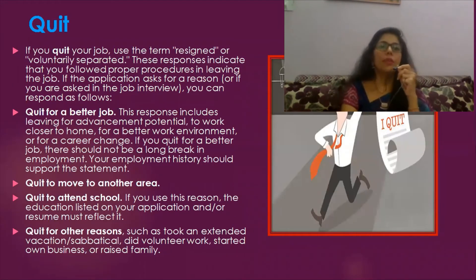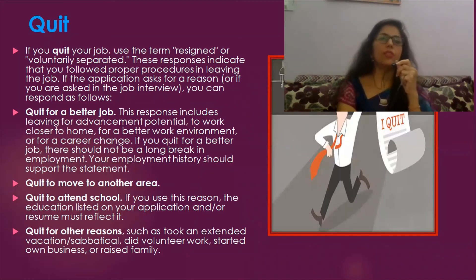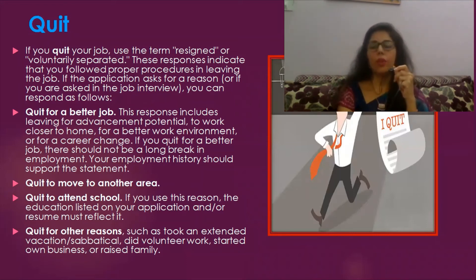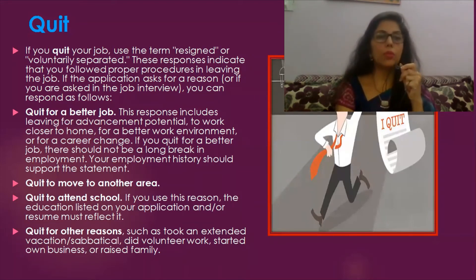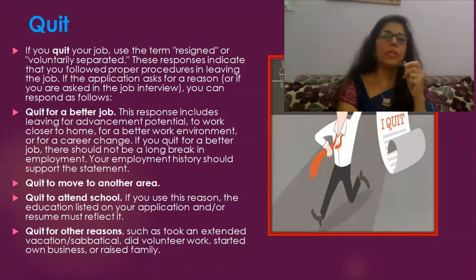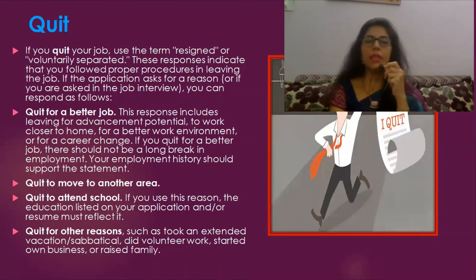If you quit your job, use the term 'resigned' or 'voluntary separated.' These responses indicate that you followed proper procedures in leaving the job. If the application asks for a reason, you can respond: 'quit for a better job' — this includes leaving for advancement, potential to work closer to home, a better work environment, or a career change. If you quit for a better job, there should not be a long break in employment, and your employment history should support the statement. You can also indicate 'quit to move to another area.'